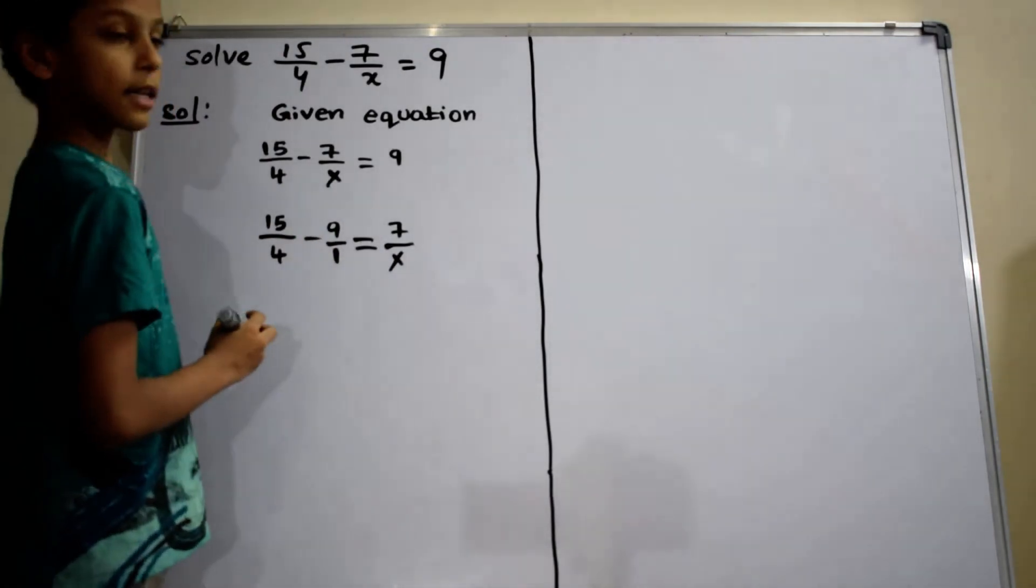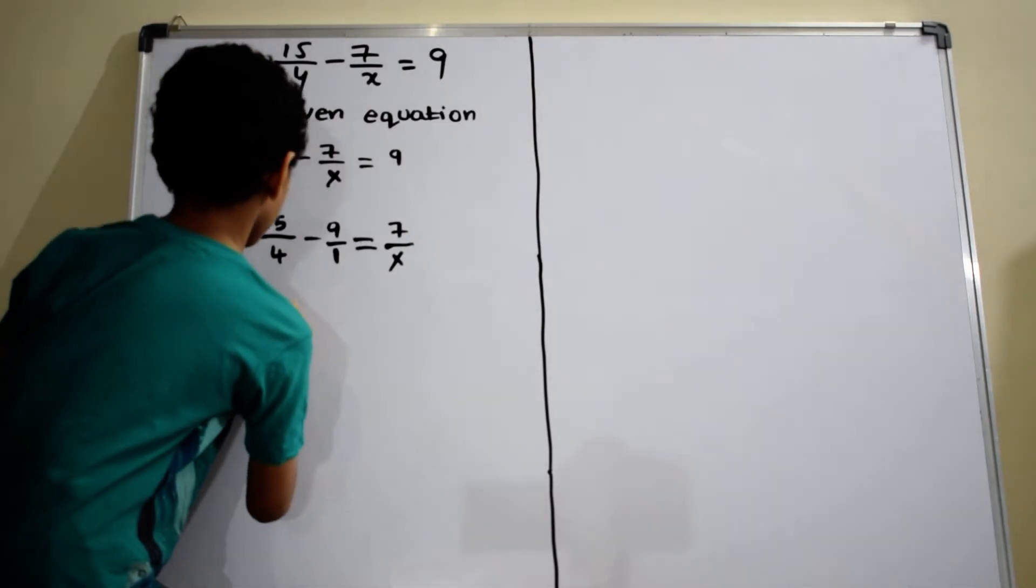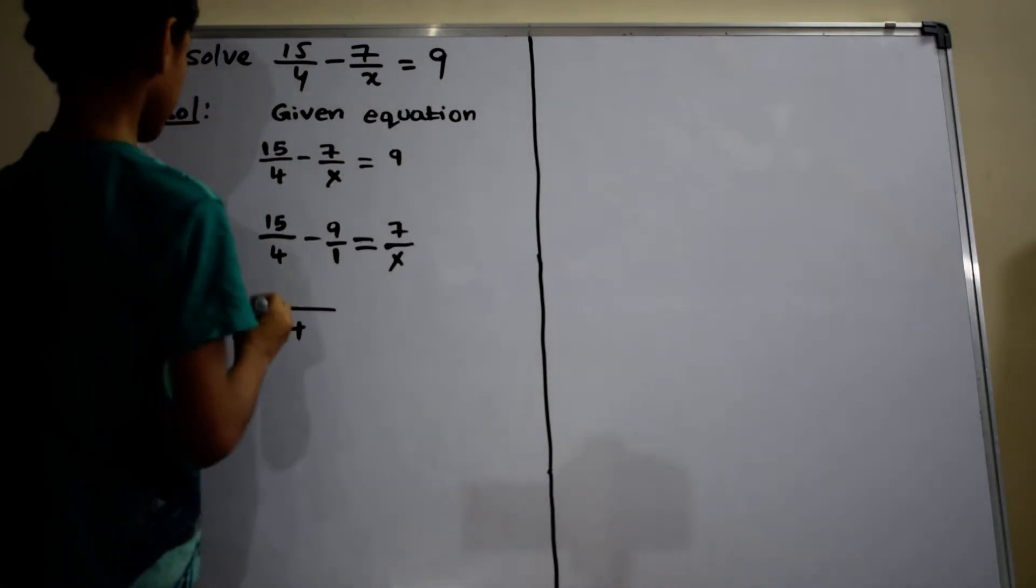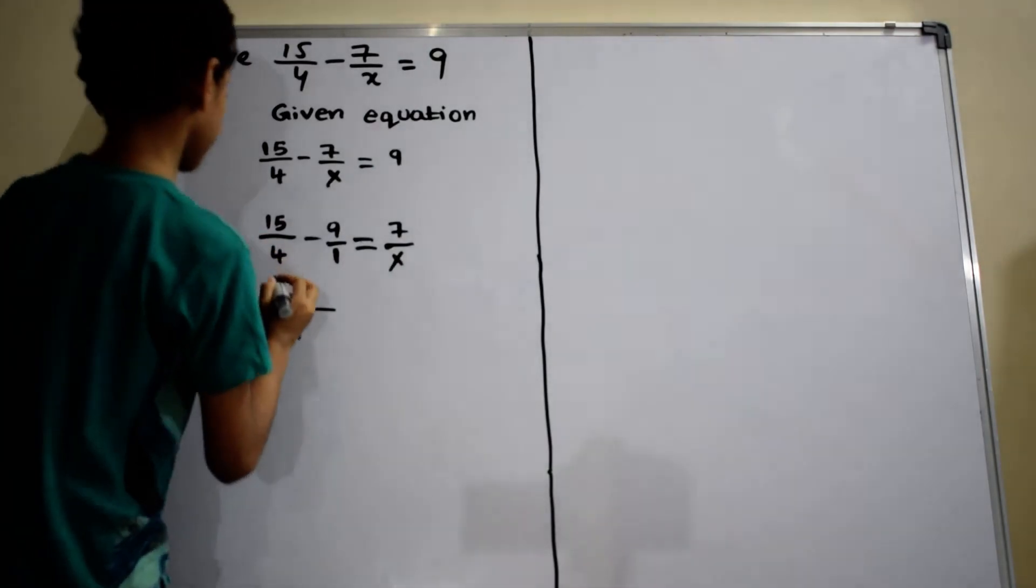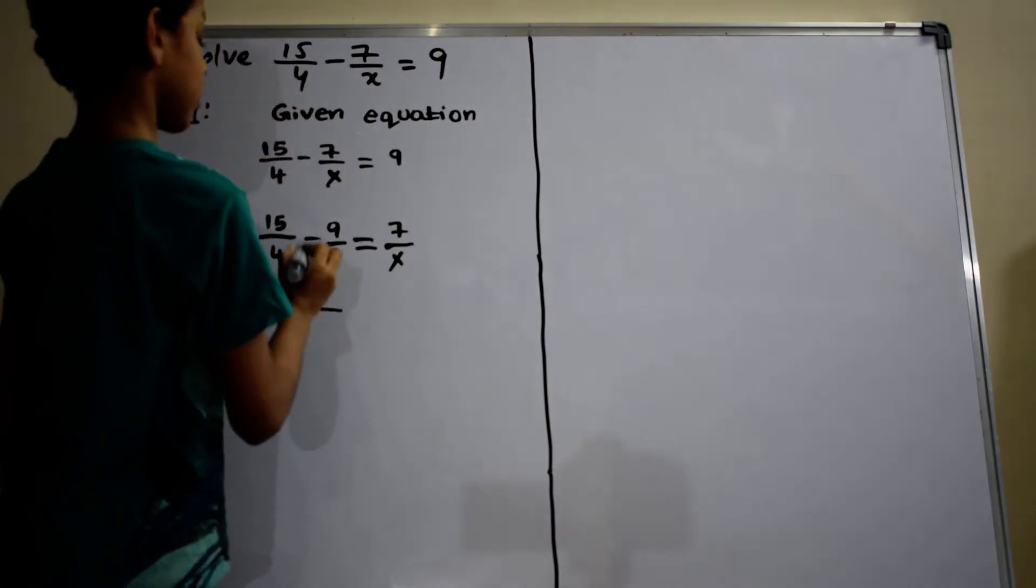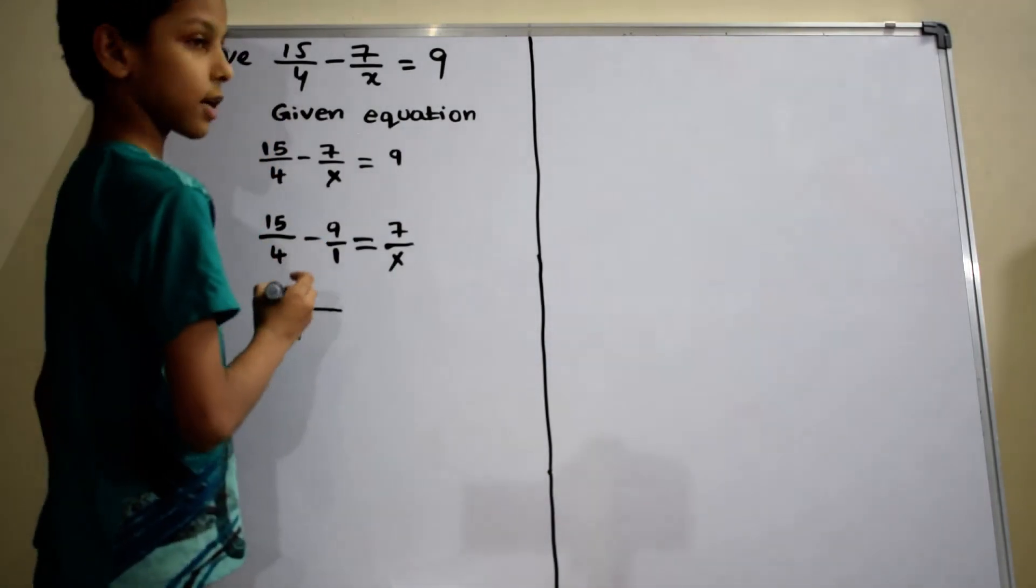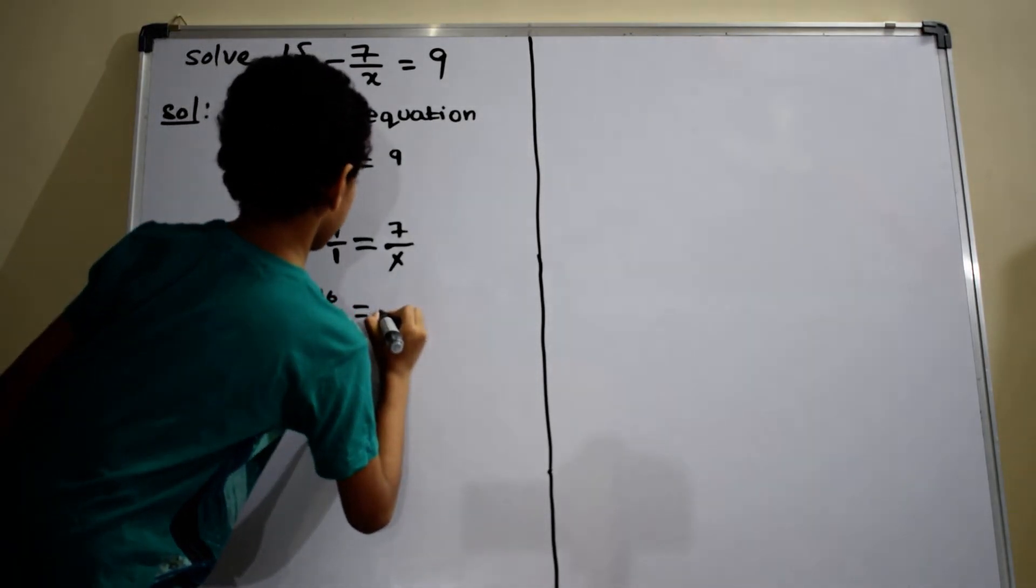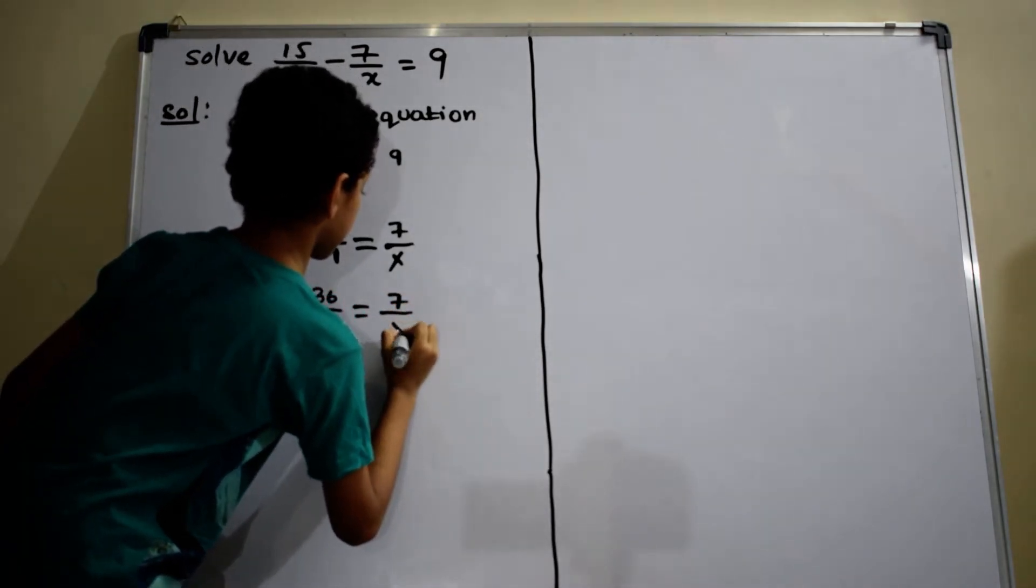For 4 comma 1, LCM equals to 4. 4 by 4 equals to 1 and numerator becomes 15. Minus, 4 by 1 equals to 4, 4 into 9 equals 36. So 15 minus 36 by 4 equals to 7 by x.